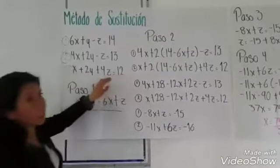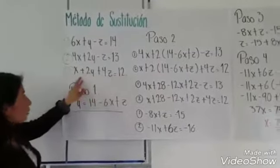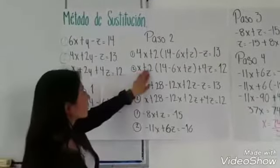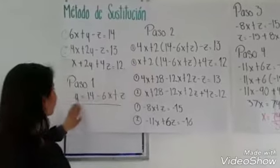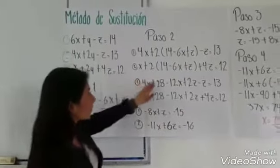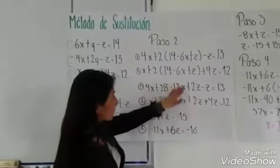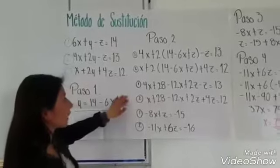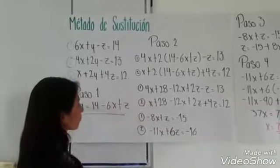De igual forma lo vamos a hacer con la tercera ecuación, que es X más 2. Entonces sustituimos lo que es Y, que es 14 menos 6X más Z, más 4X igual a 2Z.